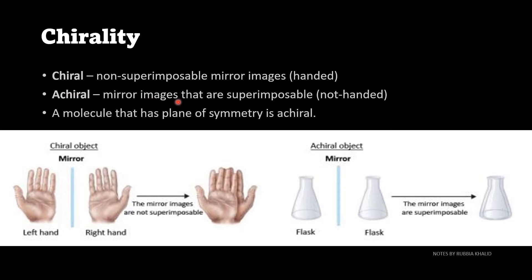Achiral is mirror images that are superimposable, not handed like a flask. If you put one flask on another, the images are superimposable. A molecule that has a plane of symmetry is always achiral.